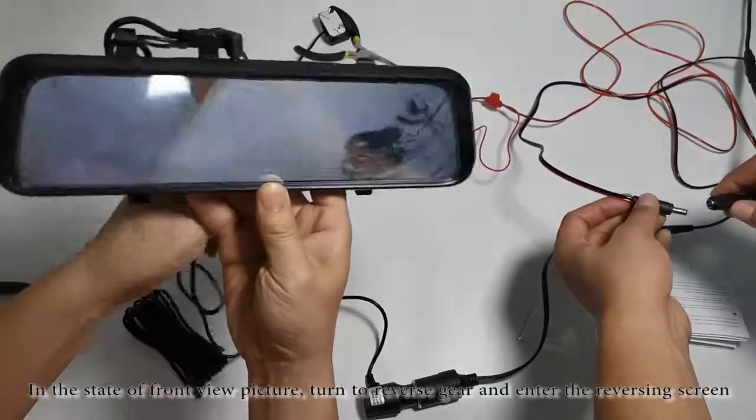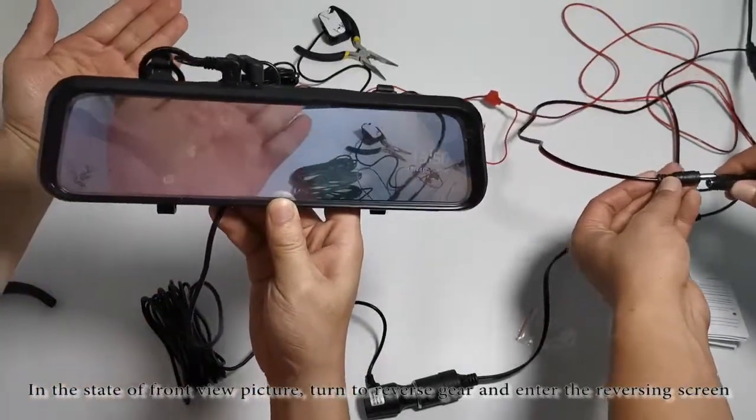In the state of front view picture, turn to reverse gear and enter the reversing screen.